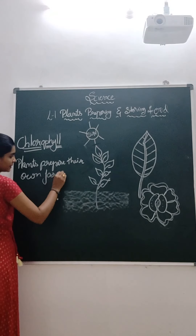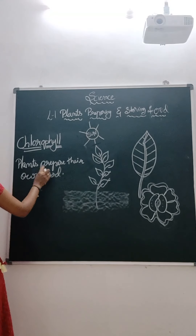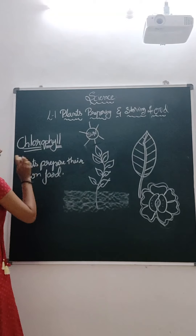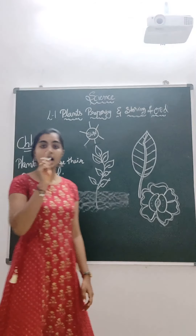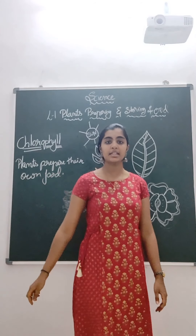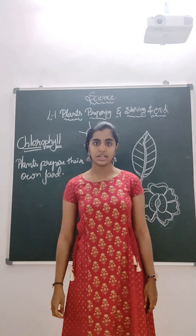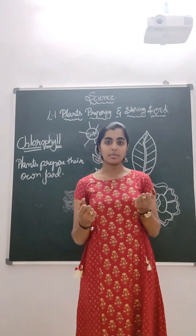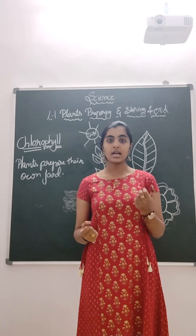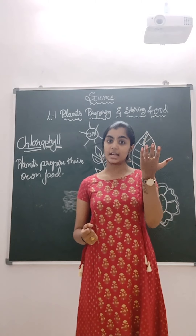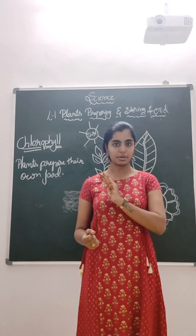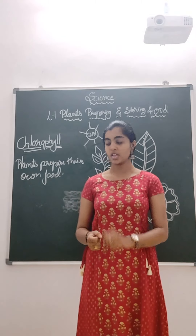How do plants prepare their own food? They take water and carbon dioxide. By using sunlight, they convert and prepare their food.